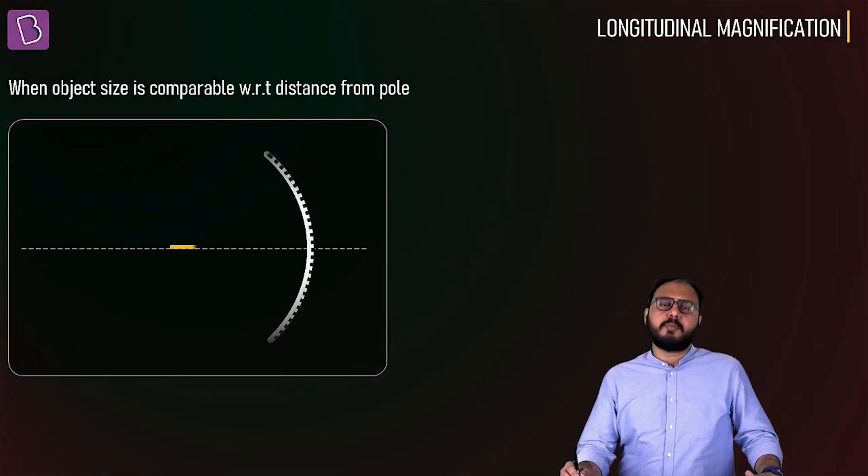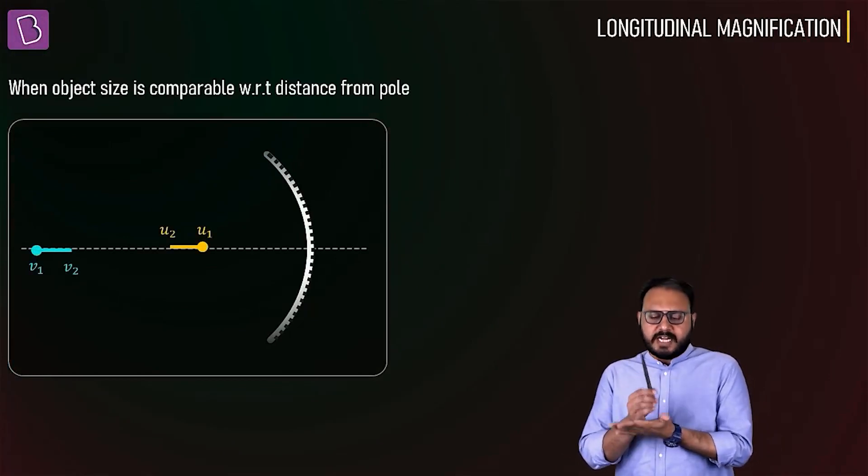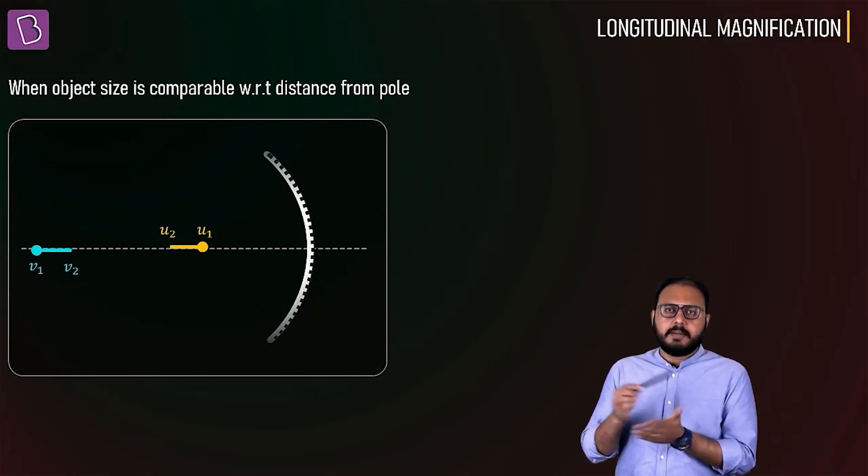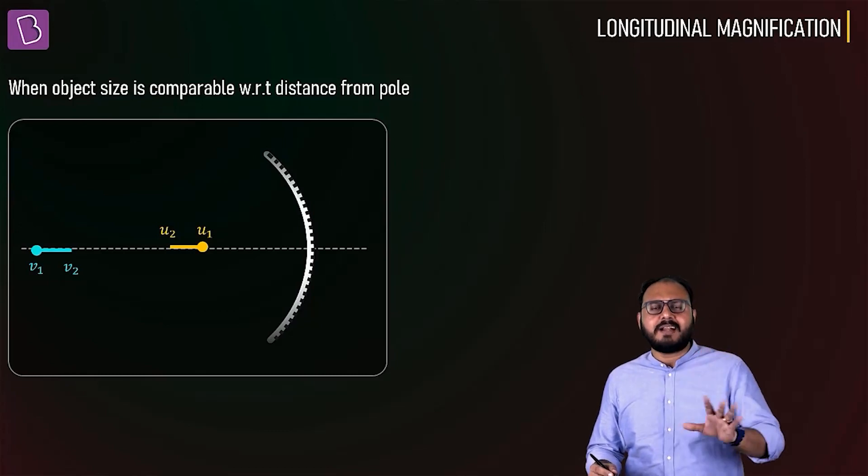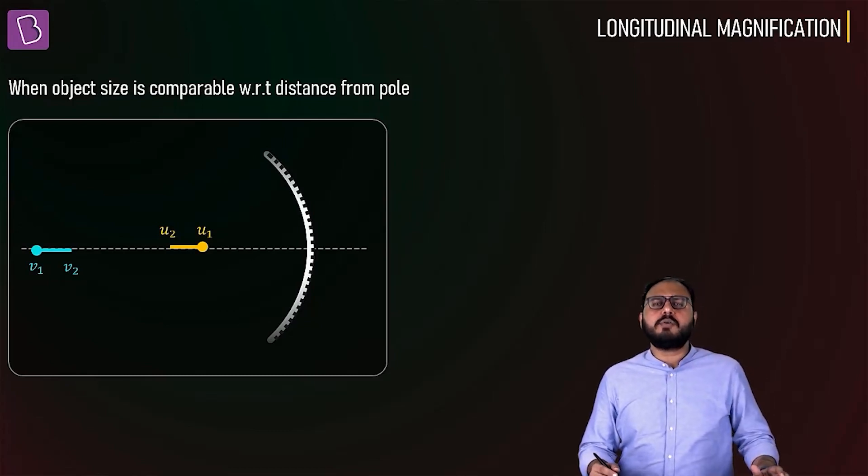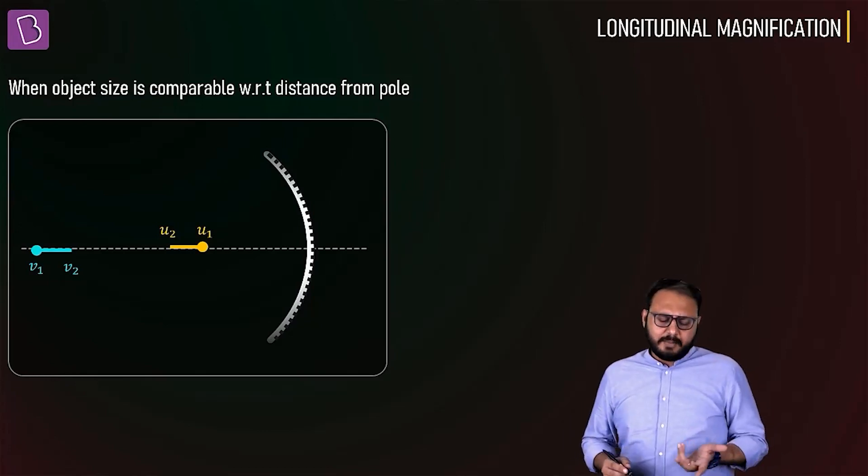Let's take a simple problem of longitudinal magnification. What does that mean? That means what if the object is standing parallel to the principal axis?